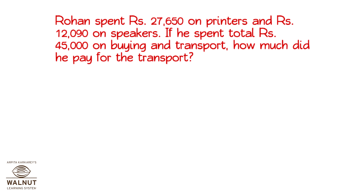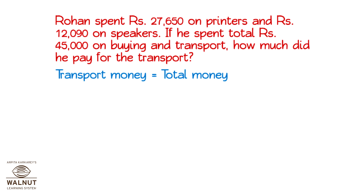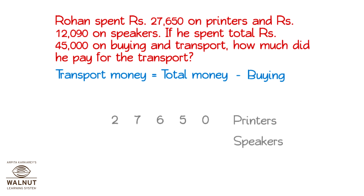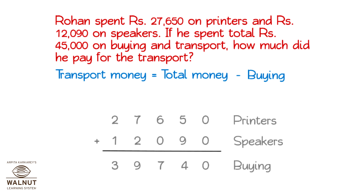Rohan spent rupees 27,650 on printers and rupees 12,090 on speakers. If he spent a total of rupees 45,000 on buying and transport, how much did he pay for the transport? We have to find out how much Rohan spent on transport. We know the total money he spent, and from that we subtract the money spent on buying things. The money spent on buying is money for printers plus money for speakers. So, we do the addition. He spent rupees 39,740 on buying.